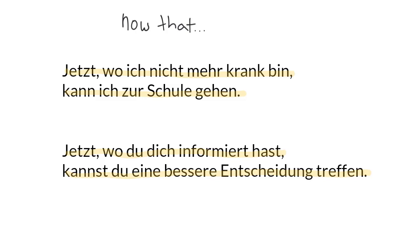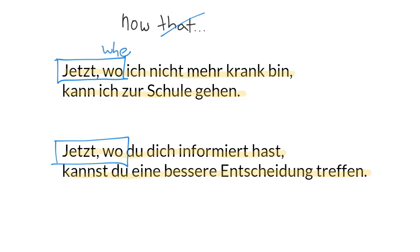The basic thing to take note of is the structure 'jetzt wo.' The first thing you'll notice is that we don't use the word 'that' in German — we use the word 'where,' wo. It sort of makes sense because time and space are closely related. So when you're saying 'now,' if you view time as a timeline, it's actually a location where something happens.